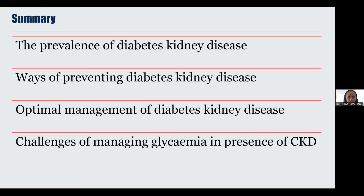We've now come to the end of the presentation. To recap: we looked at the prevalence of diabetes and chronic kidney disease across the globe and in the UK, defining the scale of the problem and highlighting the unmet and unrecognised needs of this population. We covered ways to prevent and manage diabetic kidney disease, and touched upon some of the challenges of managing glycaemia in the presence of chronic kidney disease. Thank you very much for listening. I'm happy to take any questions.